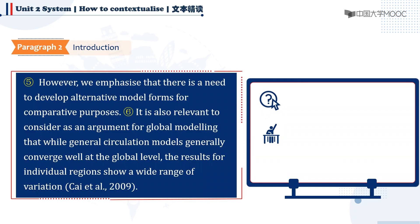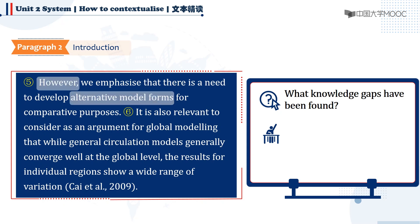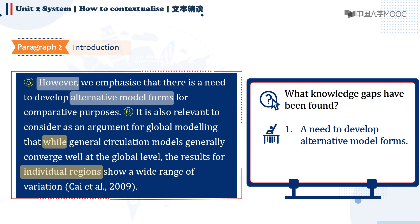Let's take a look at the following two sentences to see how they identify the knowledge gap. 'However, we emphasize that there is a need to develop alternative model forms for comparative purposes. It is also relevant to consider as an argument for global modeling that while general circulation models generally converge well at the global level, the results for individual regions show a wide range of variation.' In sentence five, the authors pointed out the gap for the aspect of form, as there is a need to develop different model forms to compare the results. In sentence six, it is about the aspect of scale, which indicates that regional differences are diverse.